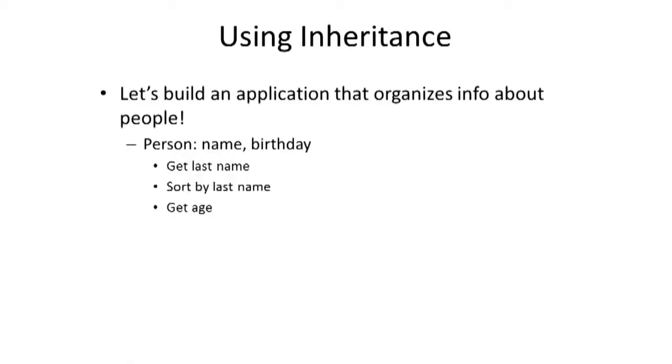Okay, enough about words. Let's look at an example. The example we're going to use here is to build an application that organizes information about people. So our basic class is going to be a person, and we'll start off by saying that a person has a name and a birthday. We'd like to be able to get the last name of the person, get the age of the person, and take a collection of people and sort them by last name, creating a little index of those people. Let's look at how we might build this class.